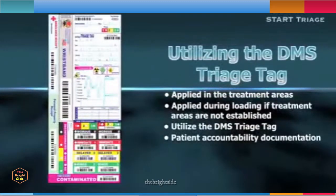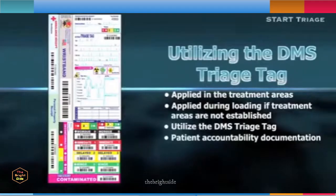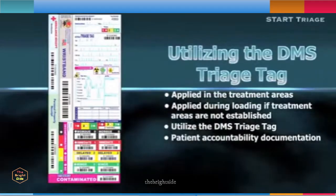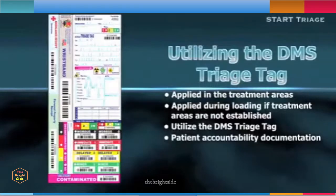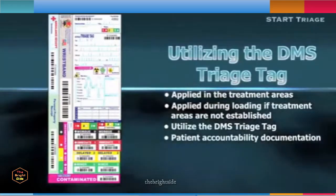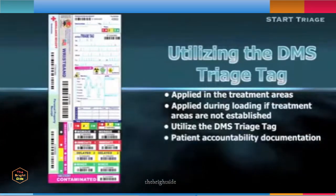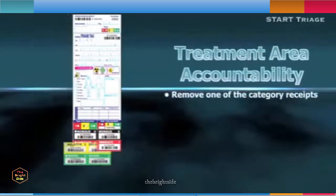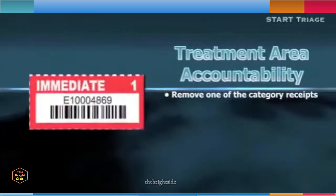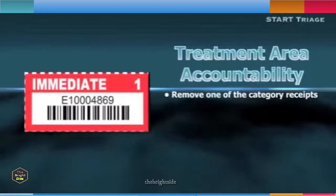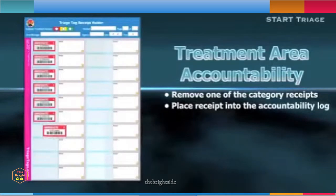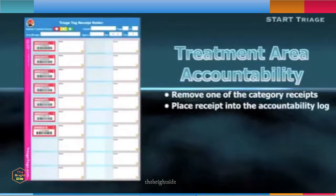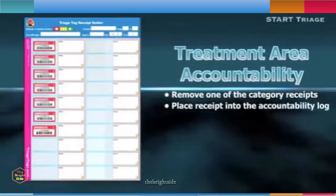Properly utilized, the DMS triage tag provides patient accountability and tracking through the treatment and transport process. Patient accountability is achieved in the treatment areas, if established, by removing the outer colored category receipt that matches the patient's triage category. The receipt is placed in an accountability log sheet by the treatment area manager. The unique number on the receipt matches that of the triage tag, allowing the area manager to have a complete record of all patients that entered the treatment area.